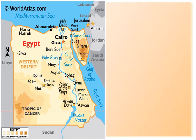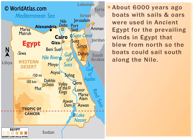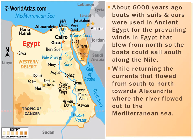Here you can see the map of ancient Egypt. About 6,000 years ago, boats with sails and oars were used in ancient Egypt. The prevailing winds in Egypt blew from the north, so boats could sail south along the river using those winds with their sails and oars. While returning, they took the help of the water currents, which always flow from south to north.